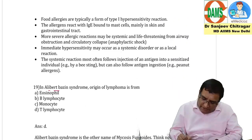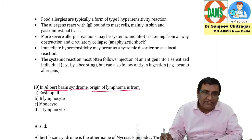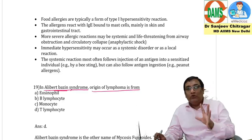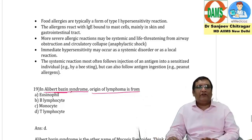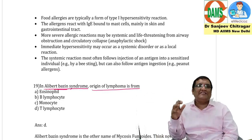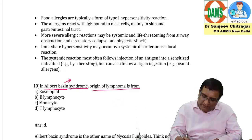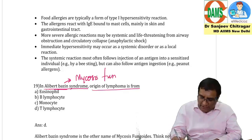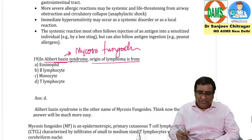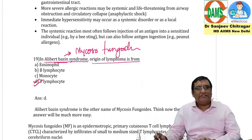In Albert Basin syndrome, what is the origin of the lymphoma? This is a tricky question. Albert Basin syndrome is another name for mycosis fungoides. Mycosis fungoides is a T-cell lymphoma, so the answer is option D — T cells. There is no logic beyond knowing this alternate name.